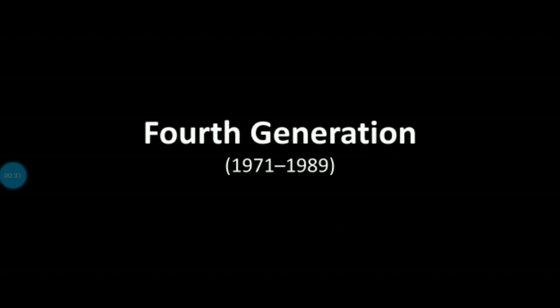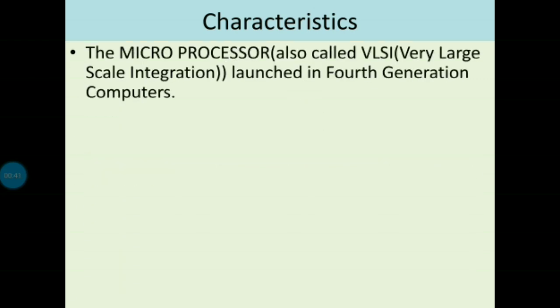First of all, what is the duration of fourth generation computers? The duration is 1971 to 1989. Coming to characteristics: in first generation the vacuum tubes were used, in second generation the transistors were used, in third generation integrated circuits were used.